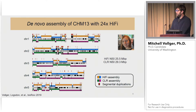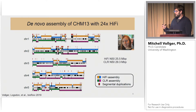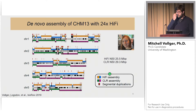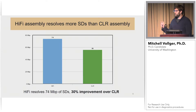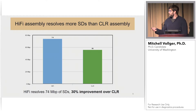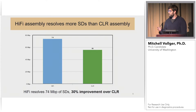Here I'm showing another ideogram with the HiFi assembly in blue and orange contigs, and the CLR assembly in green and purple. Overall continuity is comparable even though the CLR assembly has nearly three times as much data at 70x coverage. The N50 statistics are relatively comparable: HiFi achieves a 26 megabase N50 versus 29 megabases for CLR. In SD space, the HiFi assembly resolves 74 megabases of segmental duplication compared to 56 for CLR — nearly a 30 percent improvement. To put that in perspective, 74 megabases is the size of a small human chromosome.